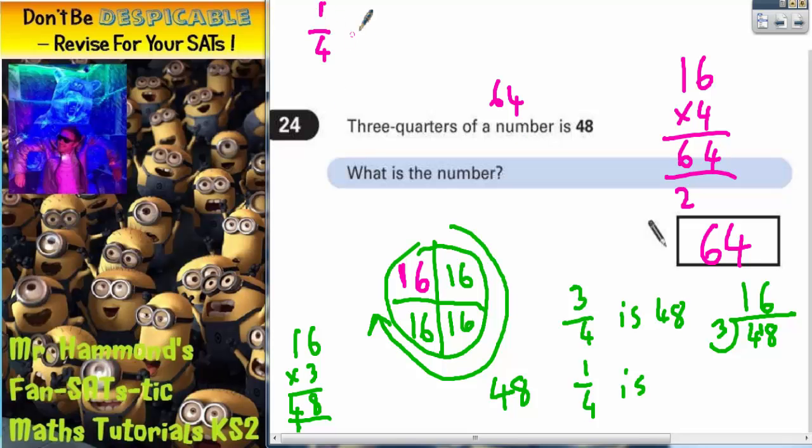Well, one quarter of 64. Remember, a quarter, half it and half it again. Half of 64 is 32. Half it again is 16. So one quarter of 16, which is what we've got in our diagram here.